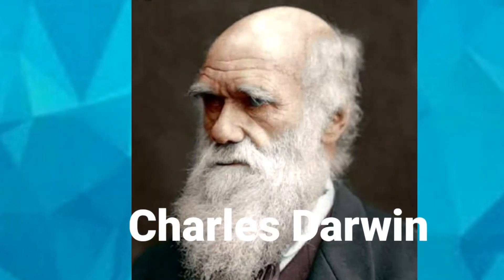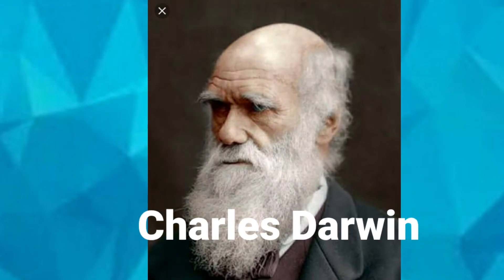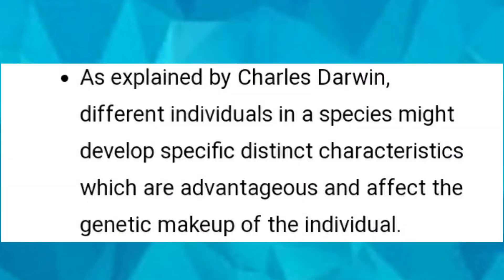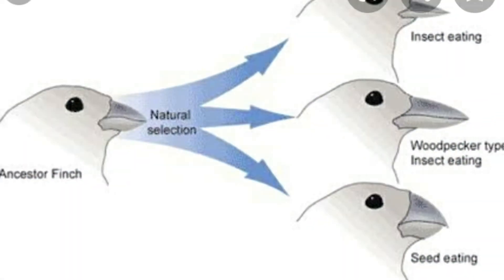The father of natural selection is Charles Darwin. Darwin explained that different individuals in a species might develop specific distinct characteristics which are advantageous and affect the genetic makeup of the individual. Under such conditions, these characteristics will be conserved and over time new species might be formed. The essential aspect is that speciation occurs only when a single species splits into several species, resulting in the multiplication of species.